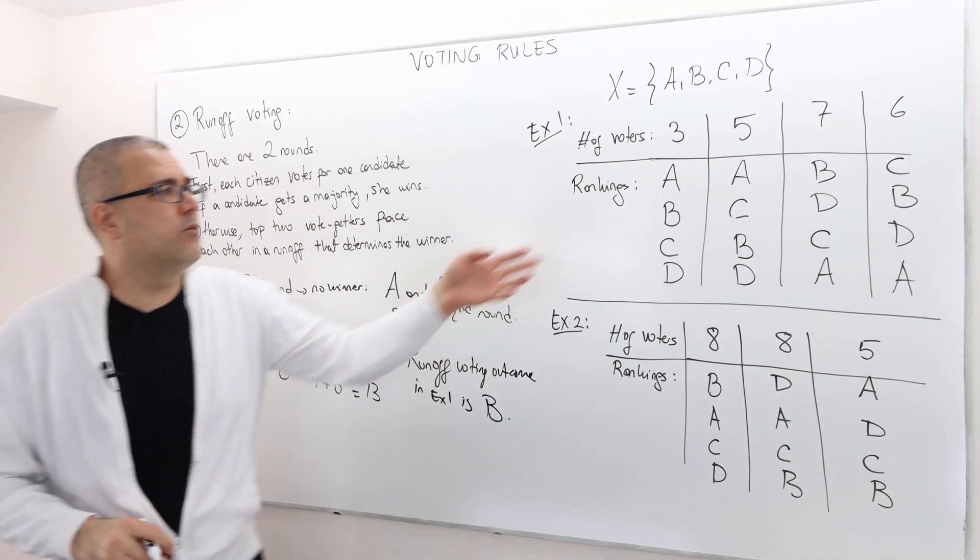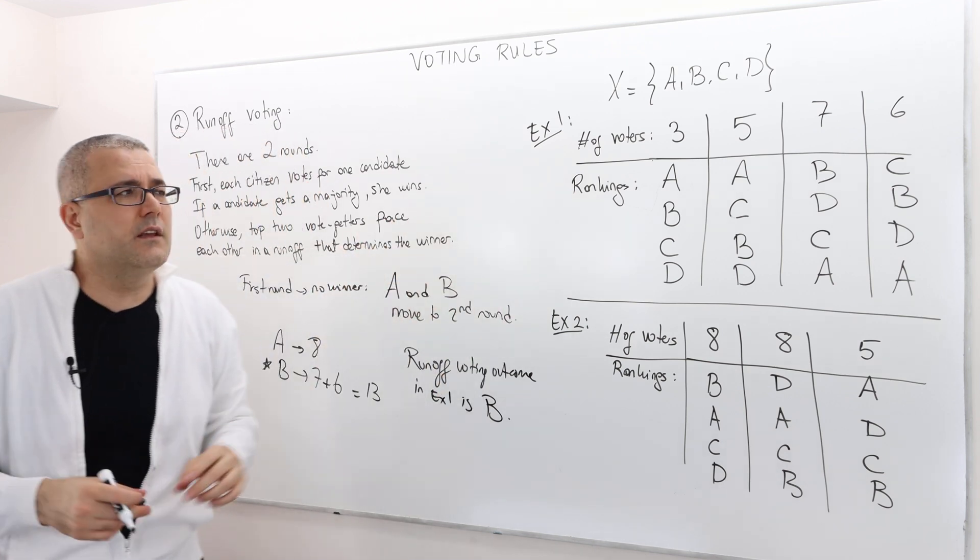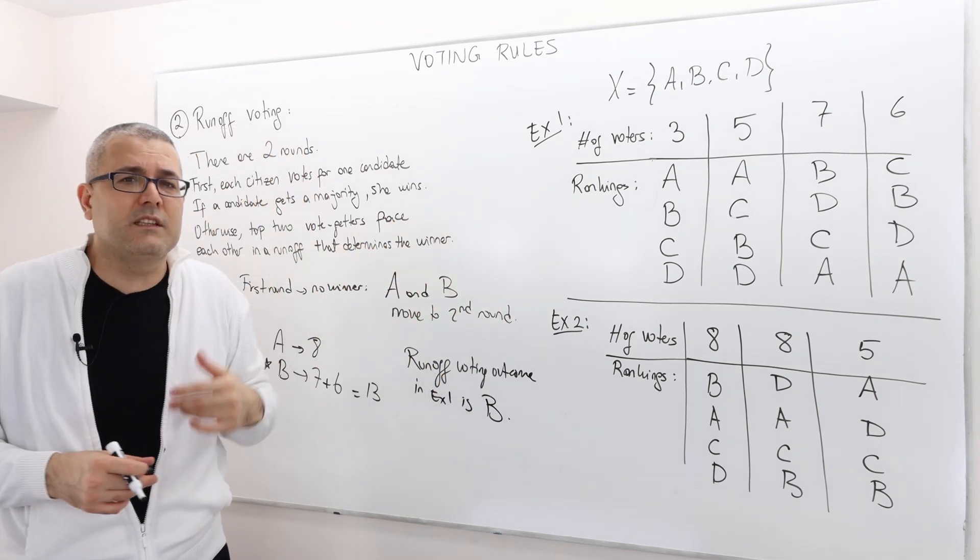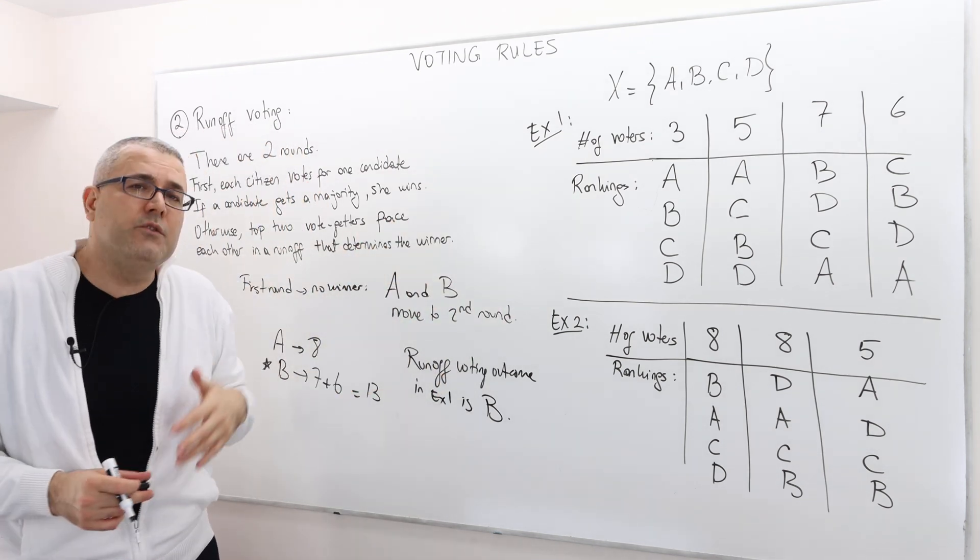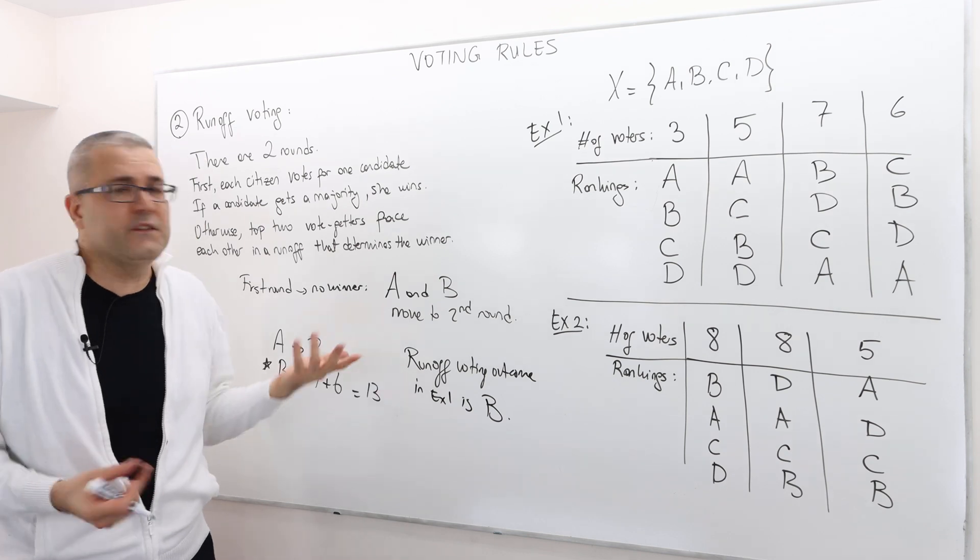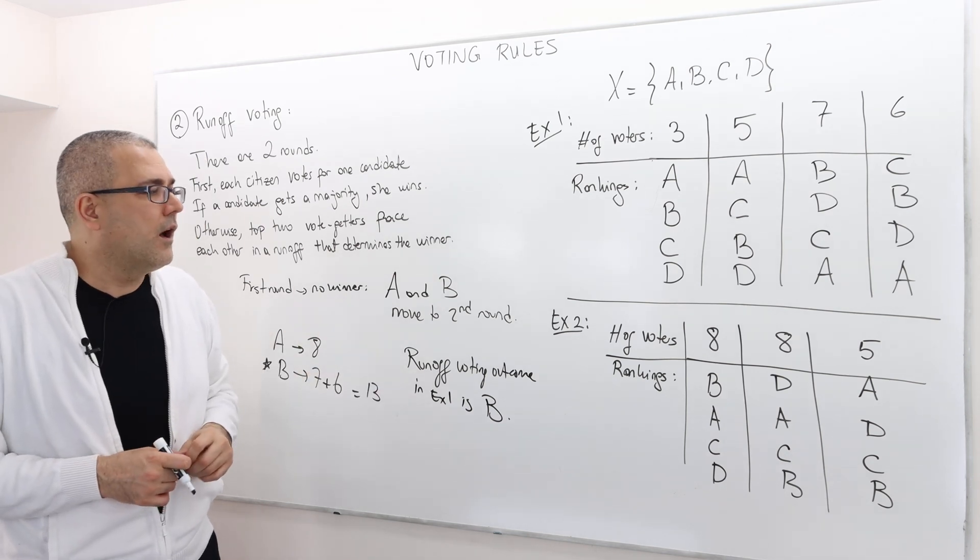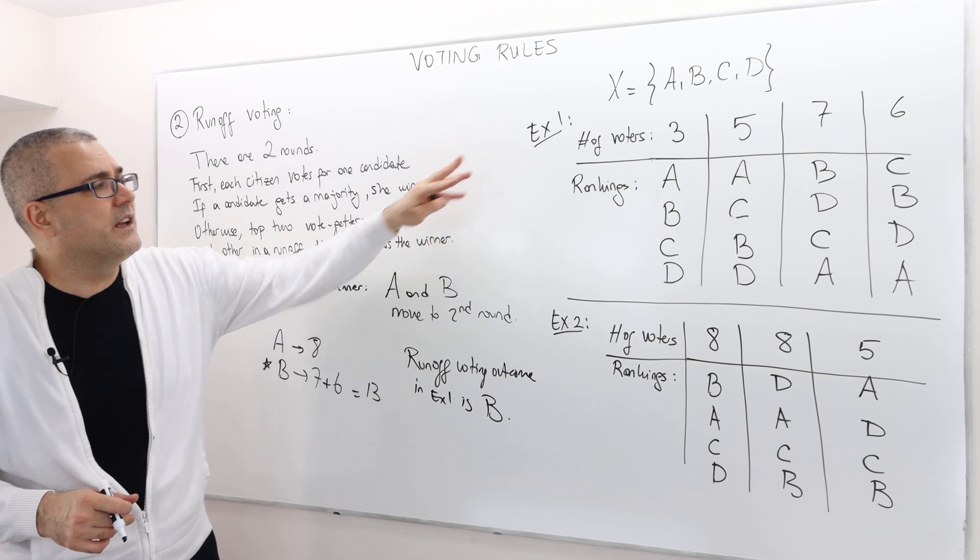Remember in plurality, it was A because A gets the most votes, but it wasn't the majority. If you choose a different rule, obviously the outcome may be different. This is what happens in example one.